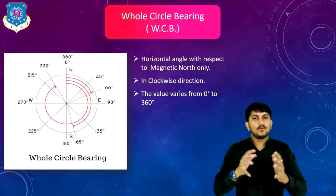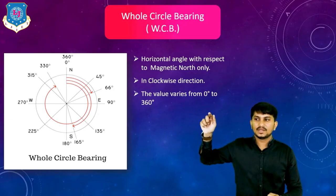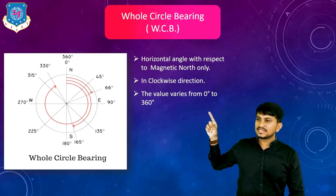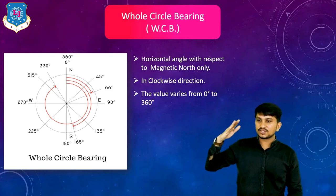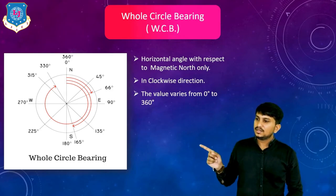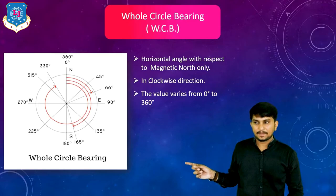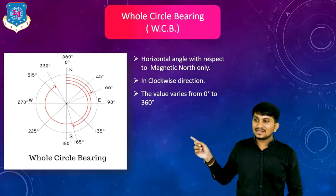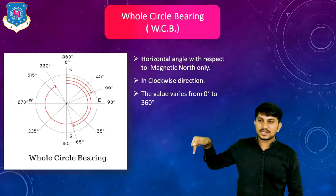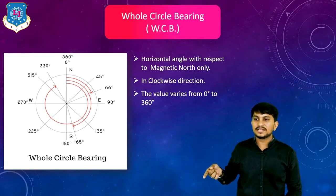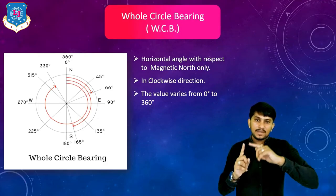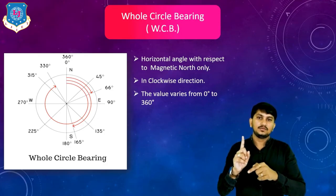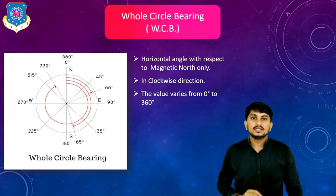The value of WCB varies from 0 degree to 360 degree. For example, one line is at 66 degree — the angle made from magnetic north in clockwise direction towards the line. Here you can see a 165 degree line. The angle starts from the magnetic north in clockwise direction. In whole circle bearing, we go from magnetic north in clockwise direction for the whole circle. This is called as WCB method or whole circle bearing.